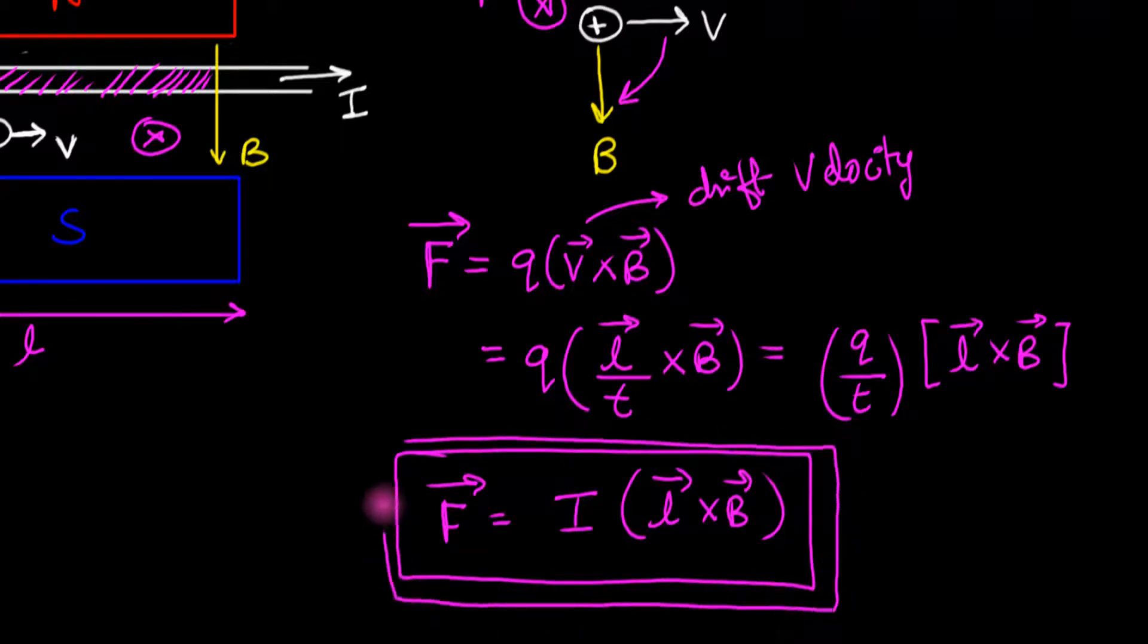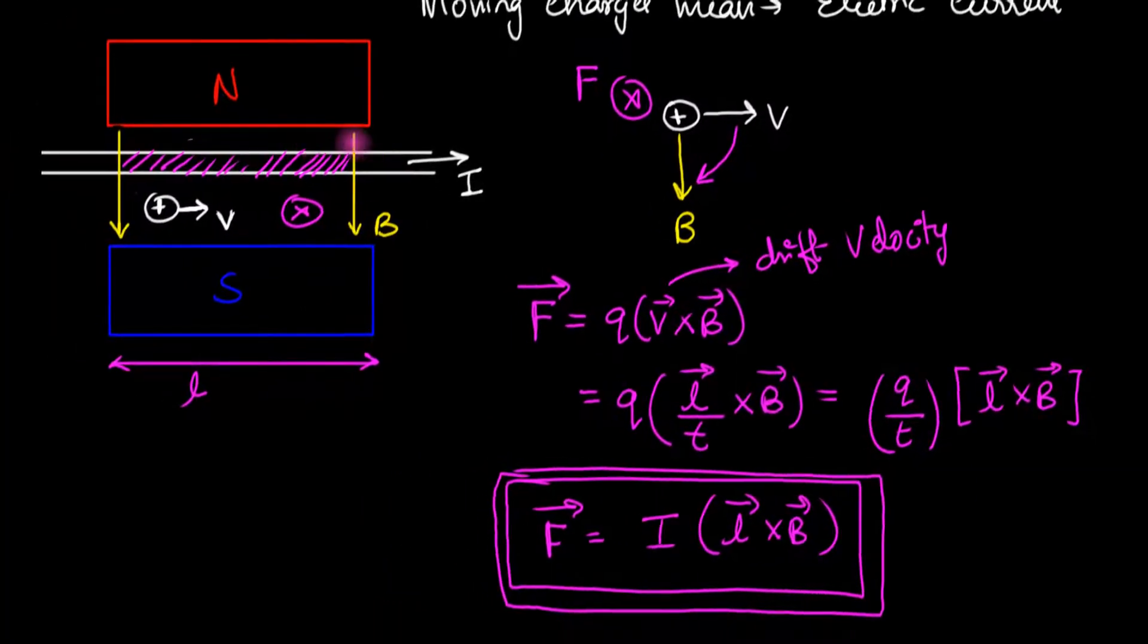Now, notice carefully that if I were to increase the region of this magnetic field, not increase the strength, but increase the region by making my magnets longer, the shaded region of the wire would be longer. That is, the L would be longer. And hence, we would now get a stronger force. So you can think of it as each section of the wire experiences this force. And the force is proportional to the length of that section.